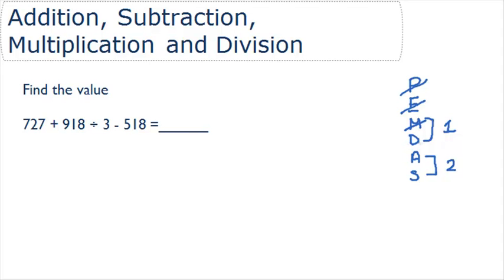So our first step is just going to be division. Let's find our division sign, and that's where we're going to start. So 918 divided by 3. This gives us 306.